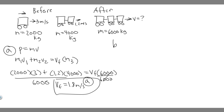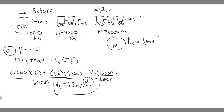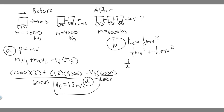So v equals 1.8 meters per second — that's the answer to Part A. Now let's do Part B. We're trying to find how much kinetic energy is lost in the collision. What we want to do is calculate the kinetic energy of the two cars before the collision, then the kinetic energy of the coupled cars after, and find the difference. The formula for kinetic energy is ½mv².